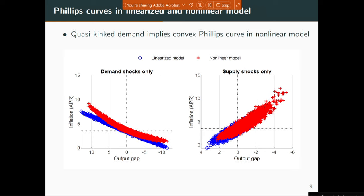If you look at the other end of the curve, as inflation goes up to 5%, 6%, 7%, you see differences between the nonlinear and linear models. As the economy enters a boom phase or inflation is high, the economy will see higher inflation rates going forward. On the right-hand side, we redo the same experiment for supply shocks — shocks that move output and inflation in opposite directions, like a cost-push shock — and you see the same nonlinearities in the Phillips curve.